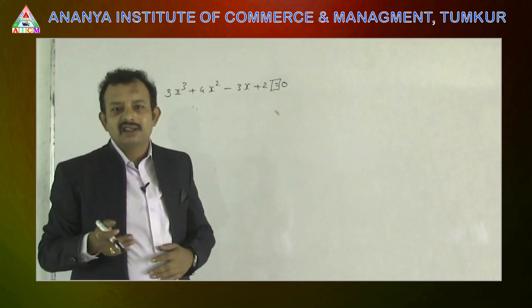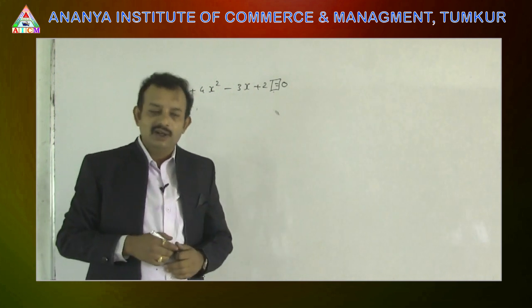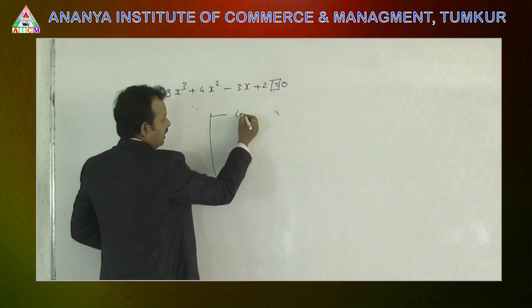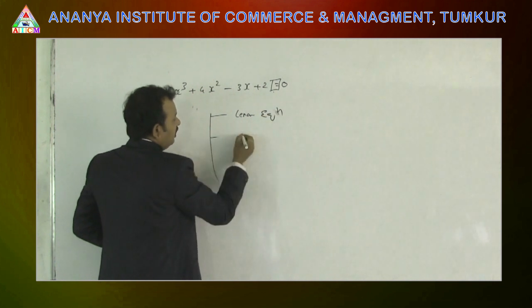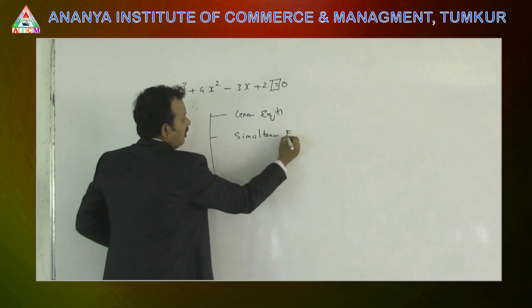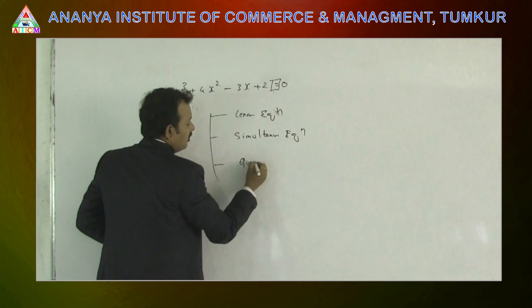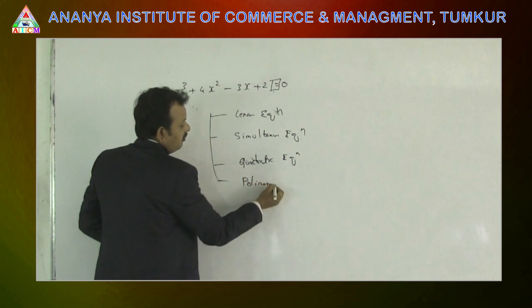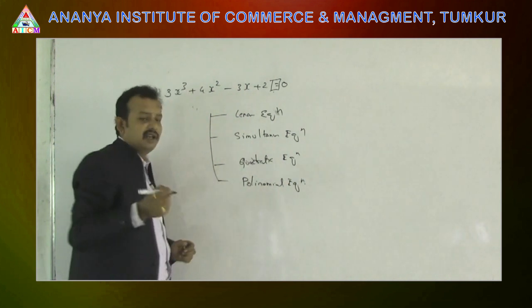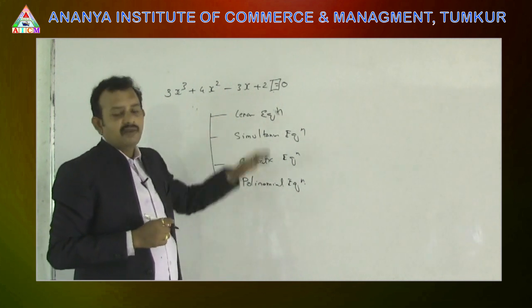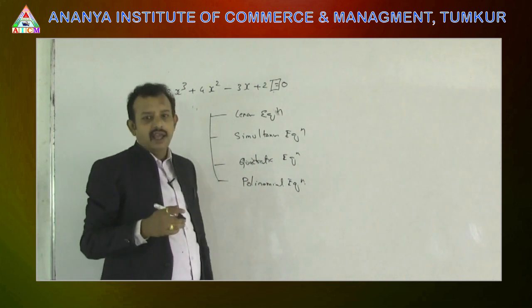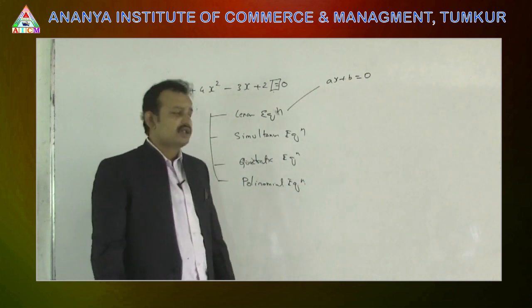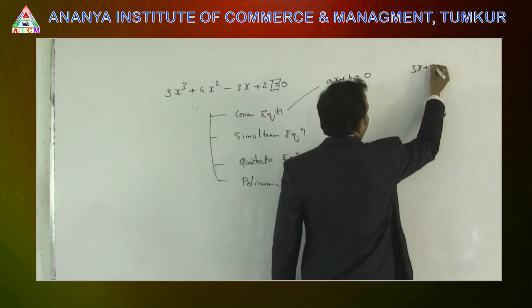Let us understand the different types of equations. We have multiple types: linear equation, simultaneous equation, quadratic equation, and polynomial equations. What is a linear equation? Any equation in the form of ax plus b is equal to 0. For example, 3x plus 5 is equal to 0.